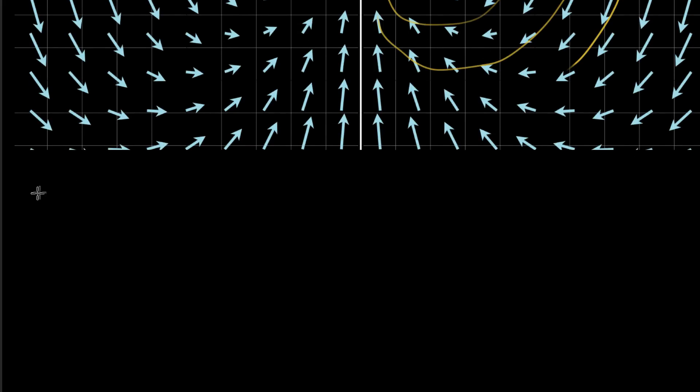So a vector field like the one I have pictured above is given as a function, a multivariable function, with a two-dimensional input, since it's a two-dimensional vector field, and then some kind of two-dimensional output. And it's common to write p and q as the functions for the components of the output. So p and q are each just scalar-valued functions, and you think of them as the components of your vector-valued output.